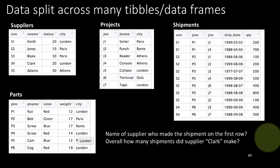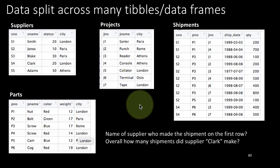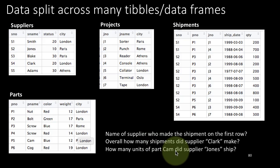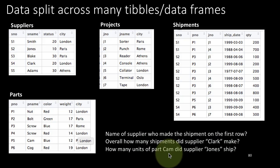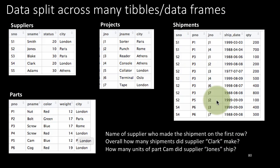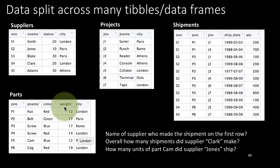This process of going across multiple tables is what is called joining, and that is what we'll be looking at very shortly. Another example question: how many units of part CAM did supplier Jones ship? To answer that question we are given only the part name and the supplier name, so we cannot answer it just by looking at shipments. We'll have to look at shipments, suppliers, and parts — data from three tables have to come together.